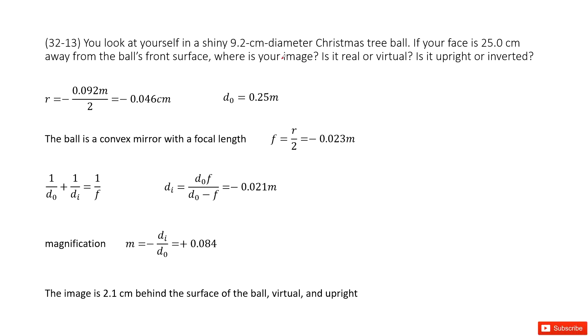And now we know its diameter is given, so we can write down the radius for this convex surface. Because it's convex, we add the negative sign there, so it becomes negative 0.046 meter.